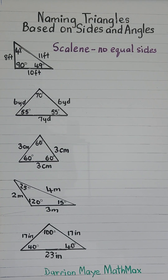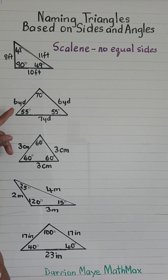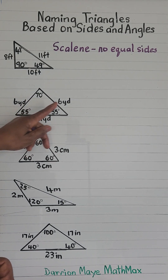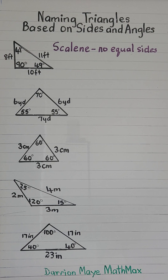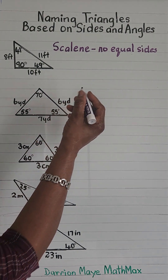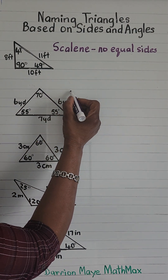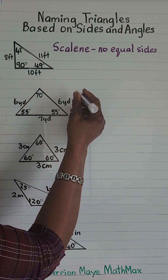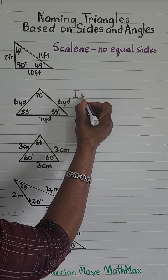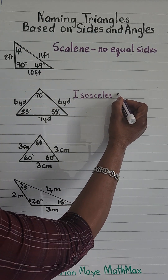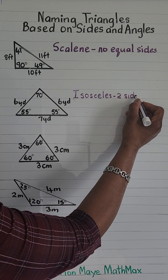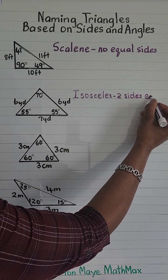The second triangle has two sides equal: six yards, six yards, and seven yards. A triangle with two equal sides is called an isosceles triangle. Two sides equal.